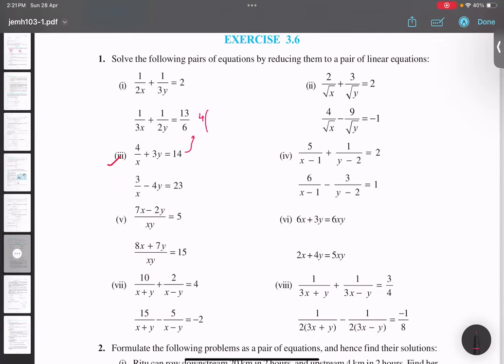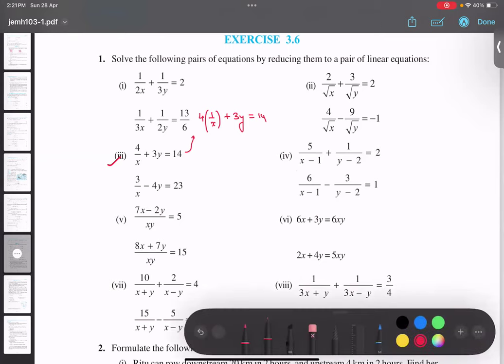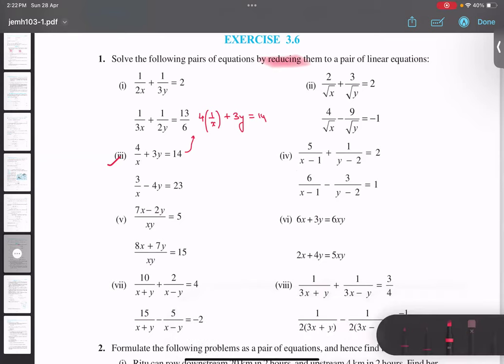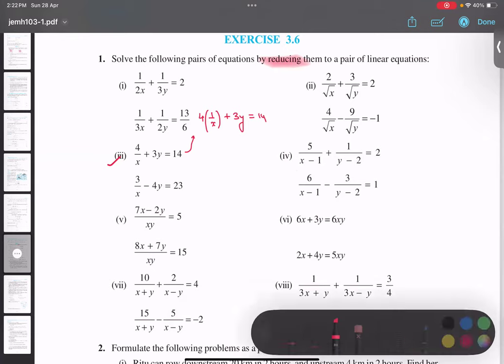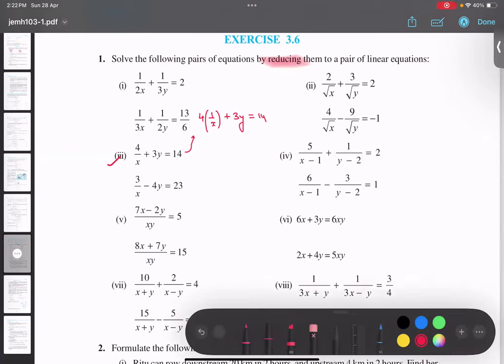So, 4m, 4m, 1 upon x. Yes. Plus 3y, 3y equals to 14. So, in this particular type of question, the question says reducing them to a pair of linear equations. So, it means that the questions are right now in, the variables are in the denominator. So, we have to first of all make them in the numerator.